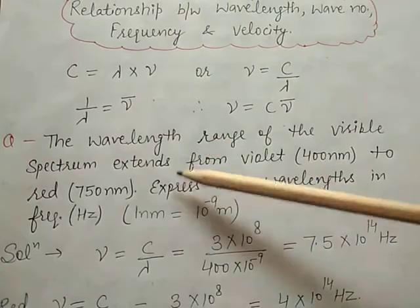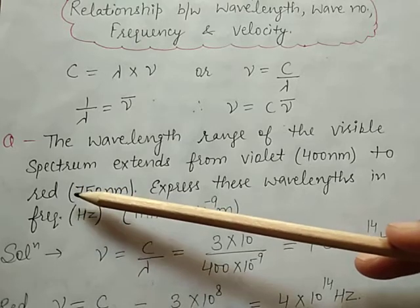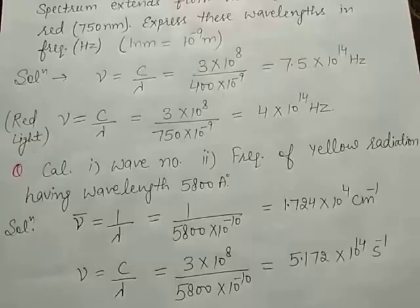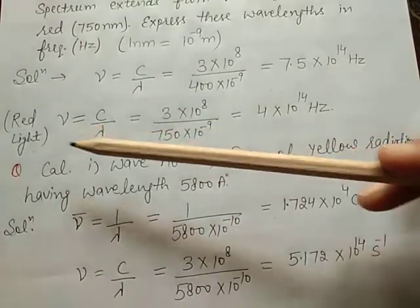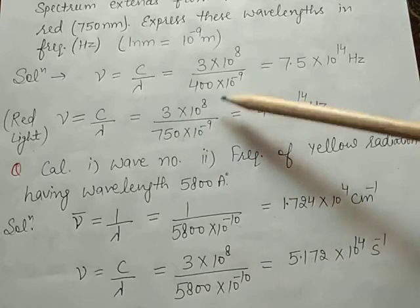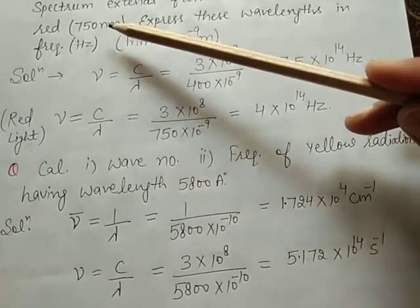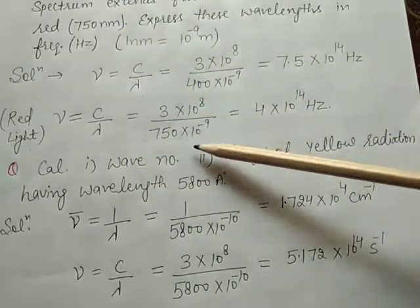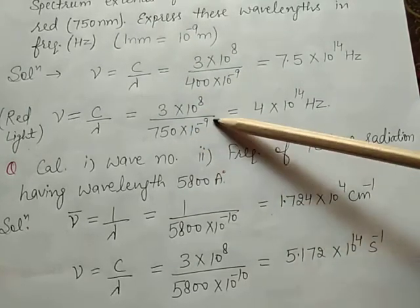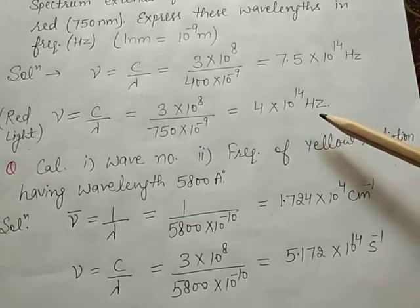In the same way, we can easily calculate the frequency of the red region. The same formula is applied. Mu is equal to C by lambda. C is 3 multiplied by 10 to the power 8, divided by the wavelength of the red region, which is 750 nanometers, converted into meters as 750 multiplied by 10 to the power minus 9. The answer is 4 multiplied by 10 to the power 14 hertz.